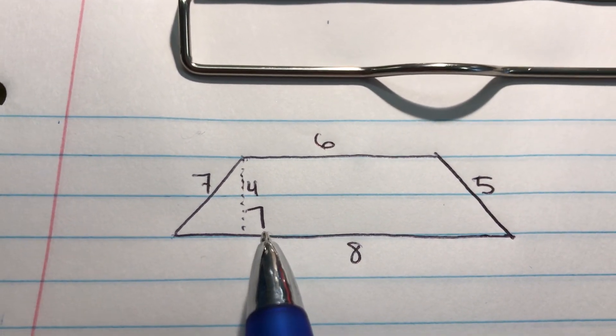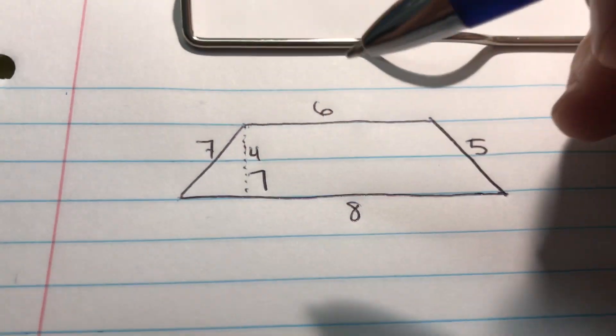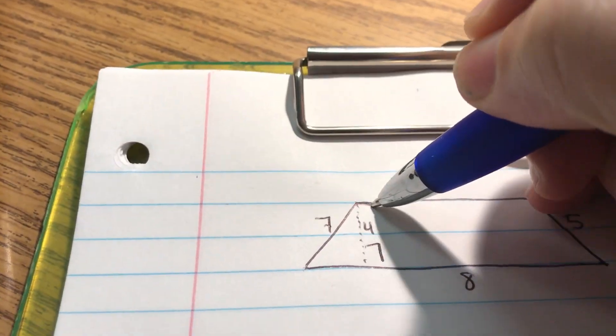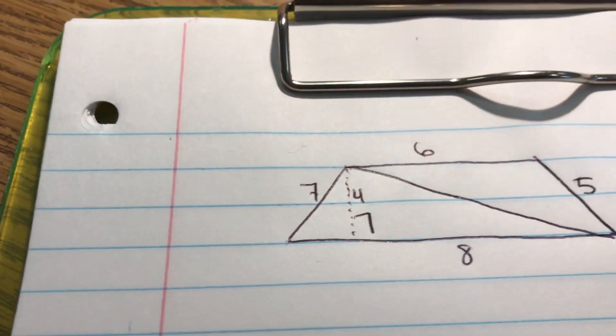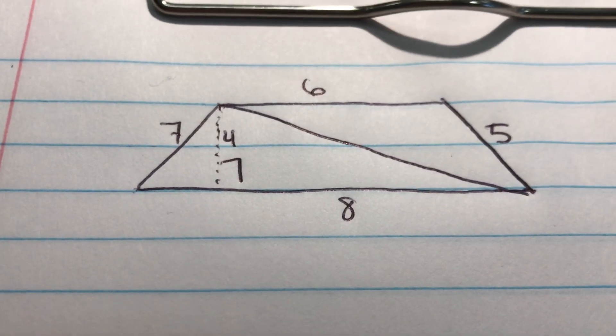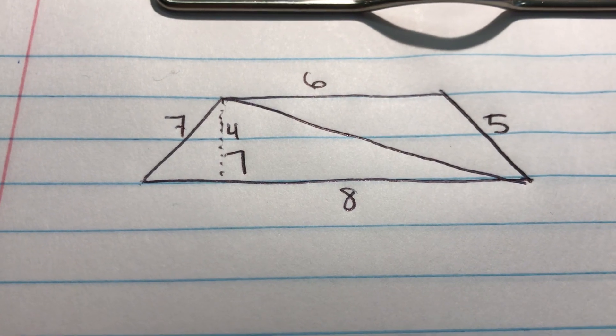What we can do is we can take this trapezoid and cut it into two triangles by going from one corner or one vertex to the other one. Of course, mine is not going to be perfect, and I'm not using a tripod, but do the best you can.